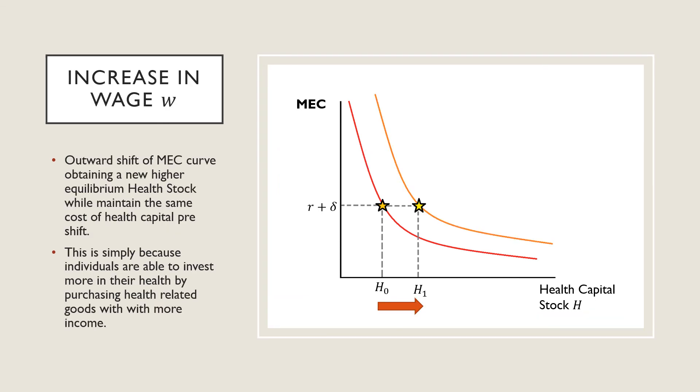An increase in wages will result in an outward shift of the MEC curve, obtaining a new higher equilibrium health stock while maintaining the same costs of health capital pre-shift. This is simply because individuals are able to invest more in health by purchasing health related goods due to having a higher income.